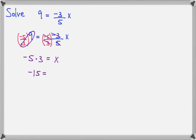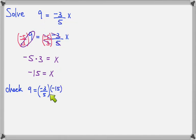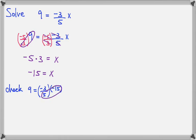Let's check it. I've copied my original equation and substituted negative 15 in place of x. Negative 15 divided by 5 gives me negative 3, and this negative 3 times the other negative 3 gives me positive 9. So that one does check out, and negative 15 is the correct answer.